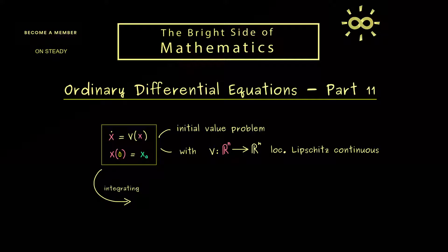And one idea for that, you might already expect, is to integrate the differential equation. So let's say we integrate both sides from 0 to t. This means we need a new name for the variable in the integration, and let's call it s. Hence, on the right hand side here we have v of x(s), and of course also ds.